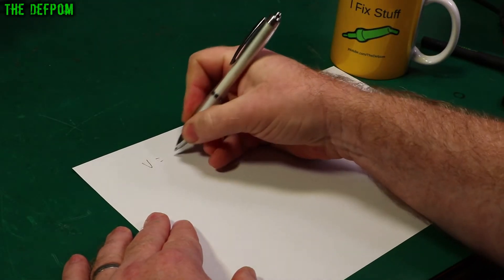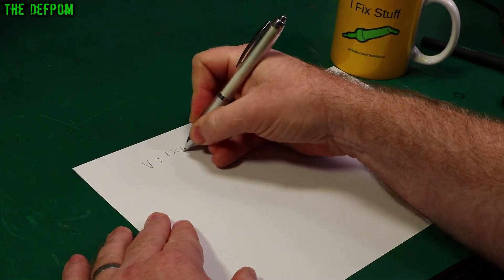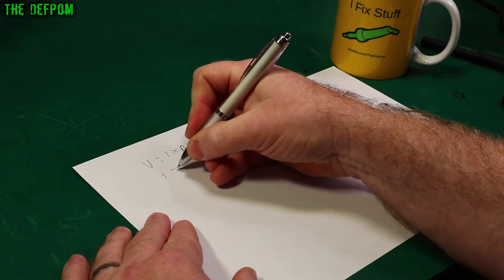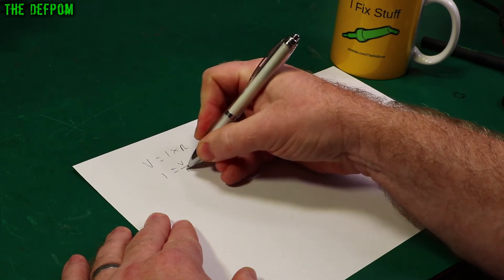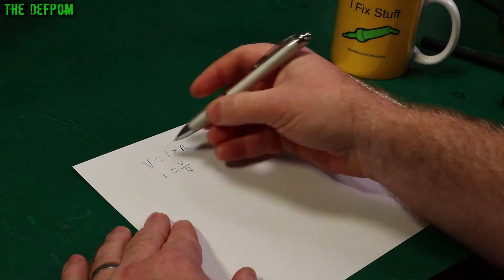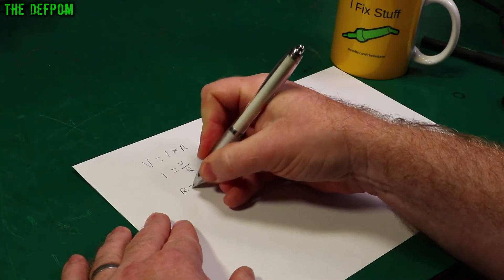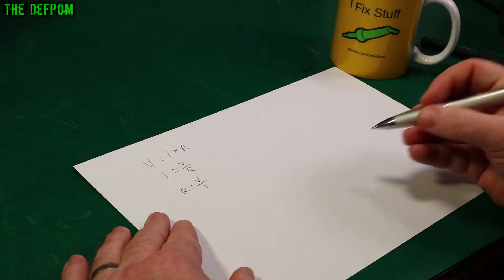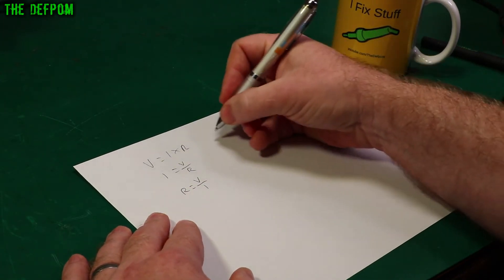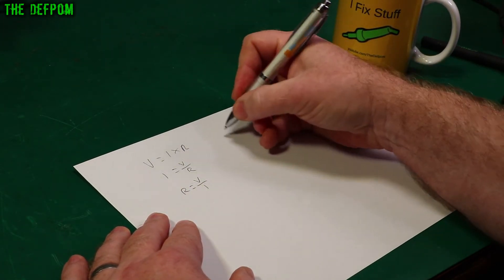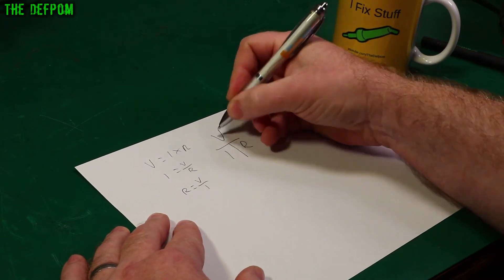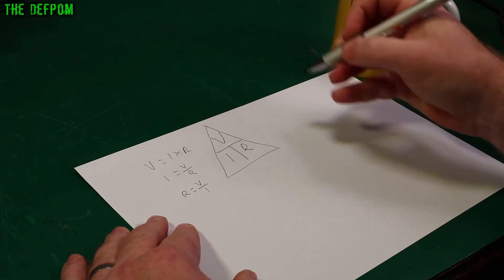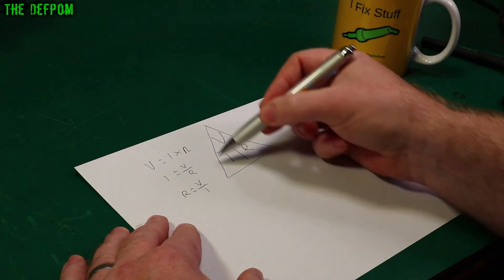Ohm's Law: V equals I times R or any variation of that. It could also be current is equal voltage divided by resistance. So it's three things, just move them around. Or resistance equals voltage divided by current. VIR. Remember that, VIR. And this is the easy way of remembering this. VIR, and you do this in a triangle. If you remember VIR in a triangle, this tells you all these formulas in one go.